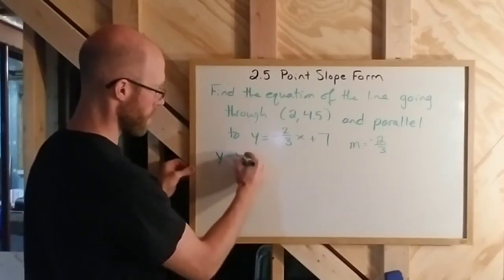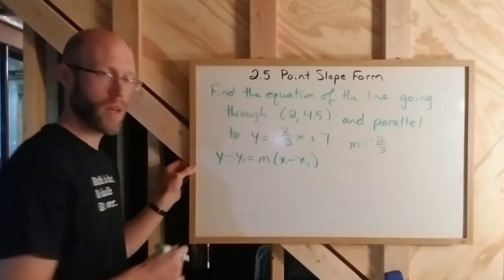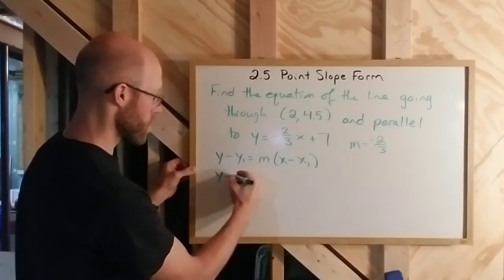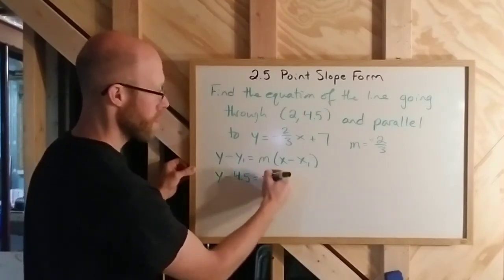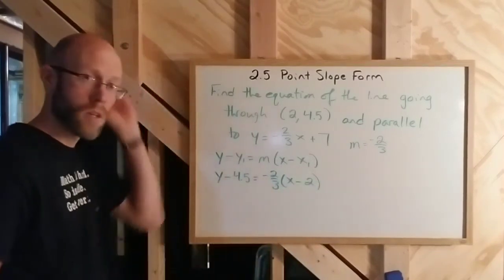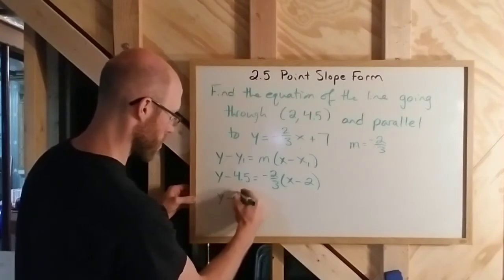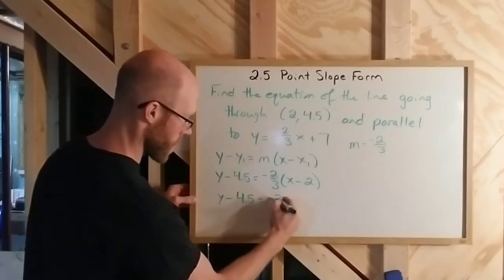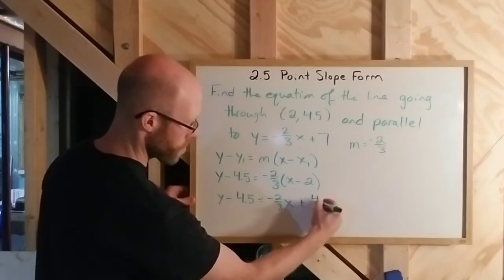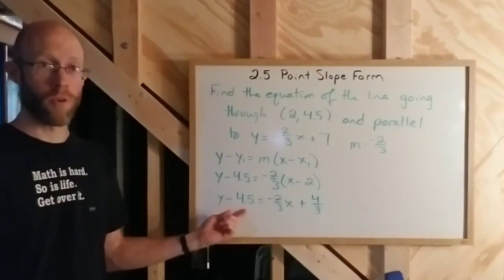The point-slope formula is y minus y₁ equals m times (x minus x₁). Plugging everything in with x₁ = 2 and y₁ = 4.5, I get: y minus 4.5 equals negative two-thirds times (x minus 2). Distributing the fraction gives y minus 4.5 equals negative two-thirds x. The double negative makes a plus, and two-thirds times two is four-thirds. Now I just need to add 4.5 to both sides.